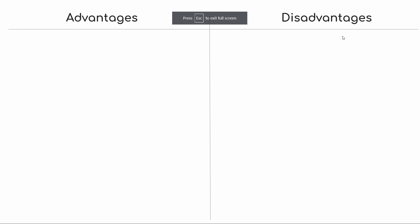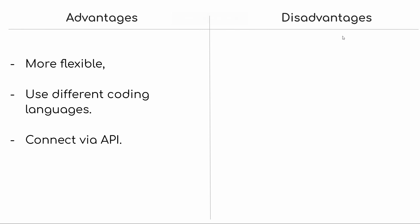In summary, these are the advantages of headless CMS. It's more flexible because you can connect it to any app, and each of the apps can use different coding languages. And the way you connect CMS to apps is via API, which is a way for different programs to talk to each other using a common language and format.